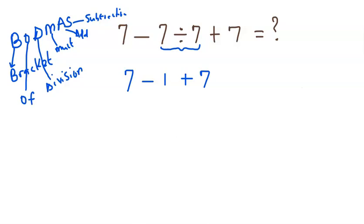Multiplication? No multiplication. Addition? There is addition here, but you need to be very careful because you cannot just add 1 and 7. This one is negative, so to maintain this rule of BODMAS we have negative 1 plus 7.